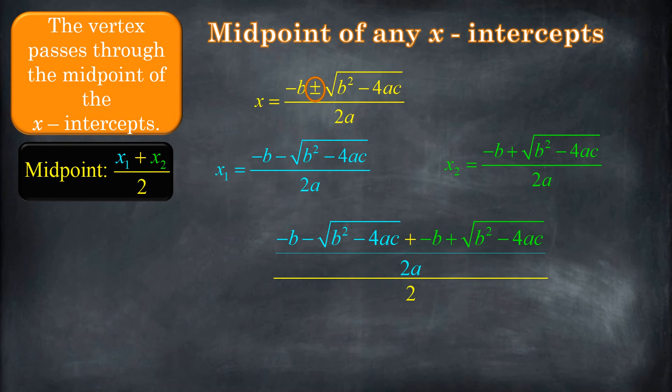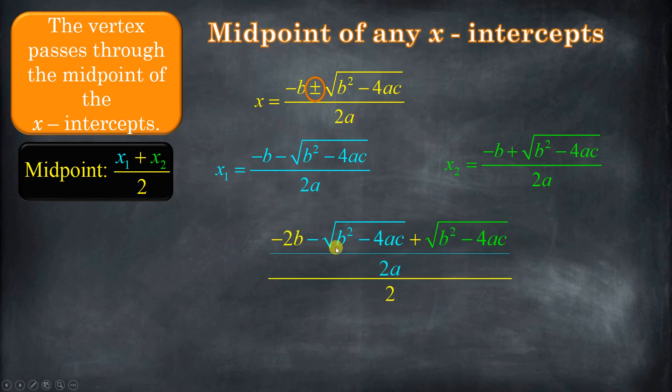Now, we can combine like terms. You see how we have a negative b plus a negative b? Well, that makes a negative 2b. And then do you see this negative square root of b squared minus 4ac? That's the same as the positive one. One's negative, one's positive. So when you add those together, you get zero. So you're going to have negative 2b over 2a, that fraction divided by 2.